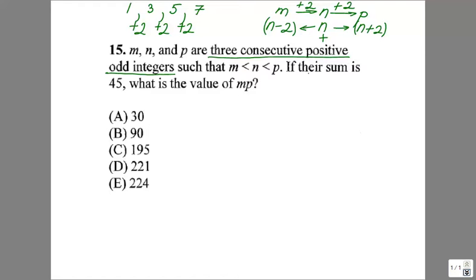What is the next fact? Well, their sum is 45. What is the sum? M plus N plus P equals 45. But for M, I have N minus two. So I have N minus two plus N plus P. But P is N plus two, so N minus two plus N plus N plus two equals 45.